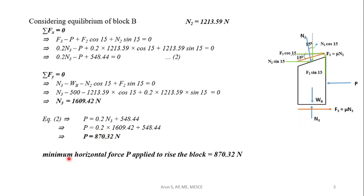From the equilibrium equation, P equals 0.2 N3 plus 548.44, giving P = 870.32 N. So the minimum force P that must be applied to wedge B to raise block A is 870.32 N directed horizontally to the left. Thank you.